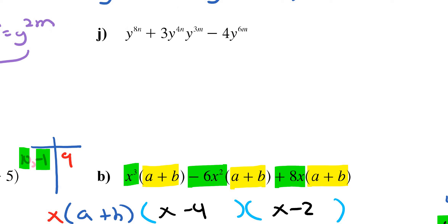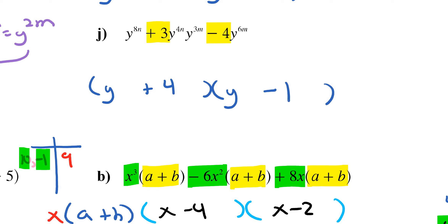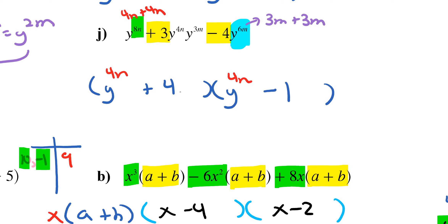Finally, letter J: I need two numbers that multiply to negative 4 and combine to positive 3: that's positive 4 and negative 1, since 4 times (−1) = −4 and 4 − 1 = 3. I have x to the 8n, so 8n equals 4n plus 4n, meaning a 4n in each bracket. On the back end, y to the 6m means 6m equals 3m plus 3m, so I need y^(3m) in each bracket. That's how you do the last question and that concludes this homework video guide.